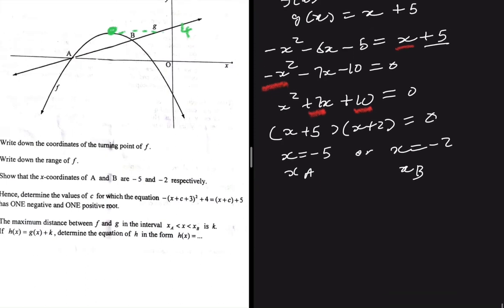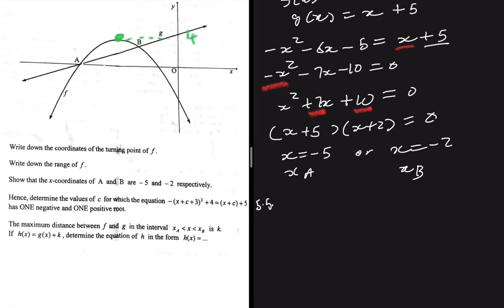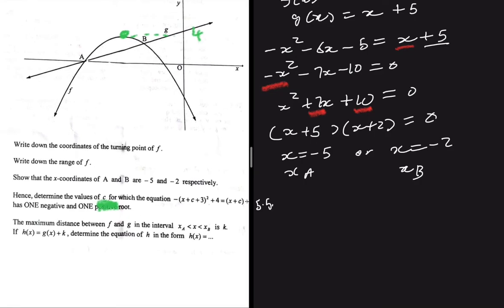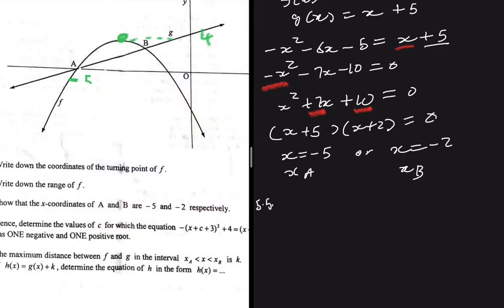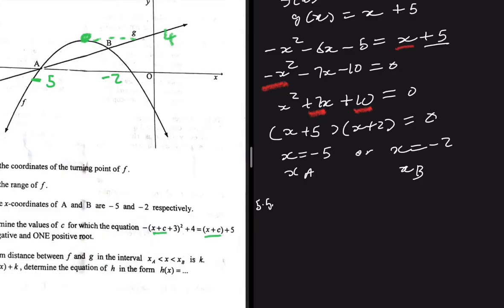5.5 says: hence determine the values of c for which -(x+c+3)² + 4 = x + c + 5 has one negative and one positive root. At this point our roots are at -5 and -2. That's where our roots are based on 5.3. So now we need to shift our graph — x plus something shifts the graph left.